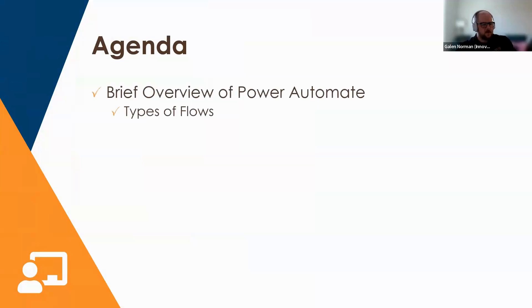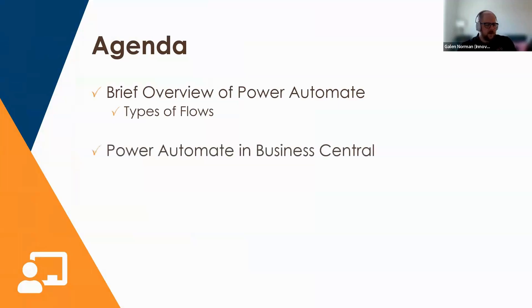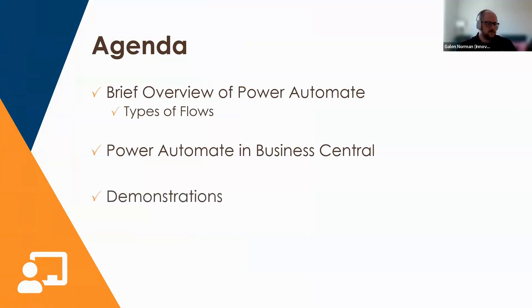To give a foundation for the Business Central-specific part of the presentation, we'll start with a brief overview of Power Automate and its place in the Power Platform. We'll also talk about the components and types of Power Automate flows, then move to Power Automate's role in Business Central - the types of flows available and some setup requirements. After that, we'll move to the demonstration portion, and then wrap up with a Q&A.